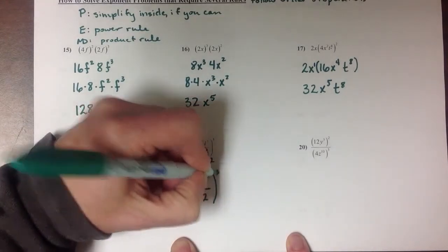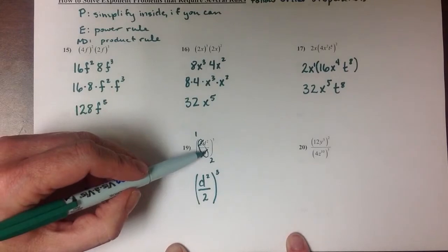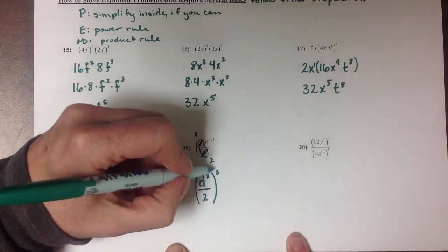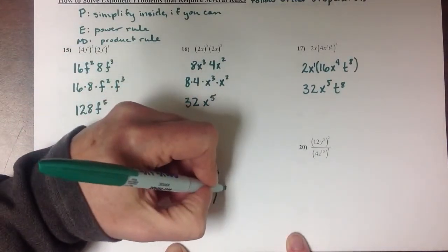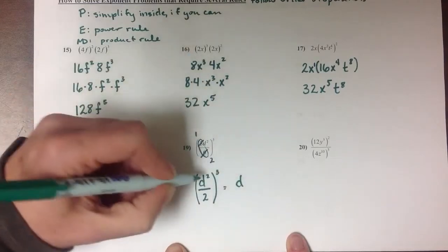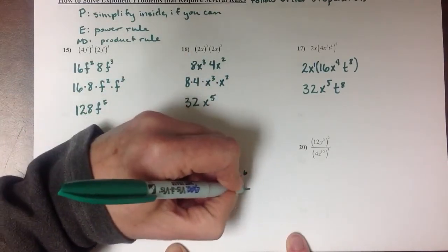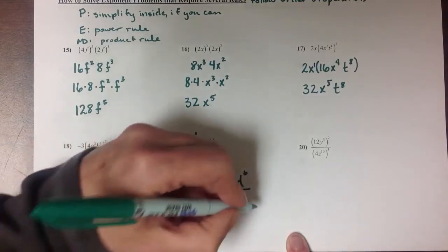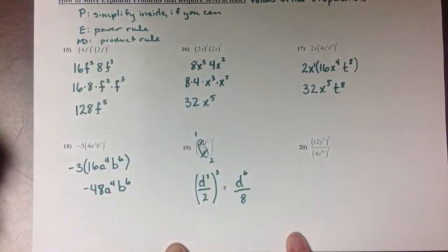A little easier than having to cube 6. So when that distributes inside, I'm going to end up with d to the 2 times 3, which is 6, over 2 to the 3rd power, which is 8.